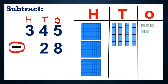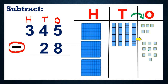Now what we need to do — we will start removing from ones. So we need to remove eight from five. Can we remove, children? No, right? Because we have only five blocks, we cannot cut eight blocks from five. So what do we do? We can borrow one ten from the tens place. So when we borrow this one ten from the tens place, we will get ten ones, because one ten will have ten ones.